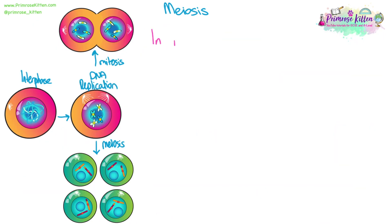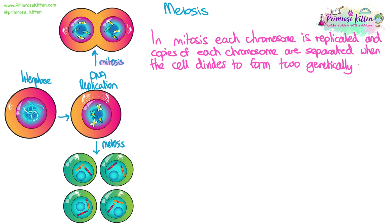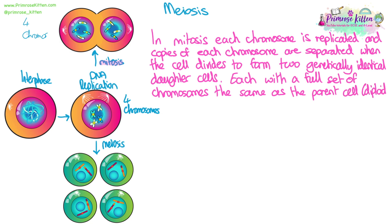We've already looked at mitosis, so let's have a quick comparison of the two to make sure we're happy with those basic differences. In mitosis we replicate the DNA. Each chromosome is replicated or copied, and then the copies of each chromosome are separated when the cell divides. You get a copy of every single chromosome — all 46 — and a copy goes into one cell and another copy goes into the other cell. So when it divides it forms two genetically identical cells that both have the full number of chromosomes. We make two genetically identical daughter cells that are diploid from one cell.